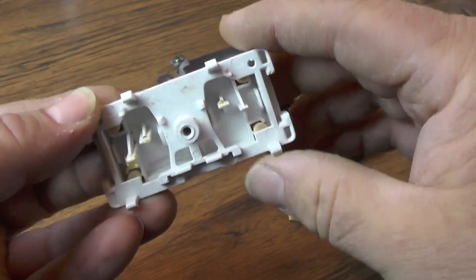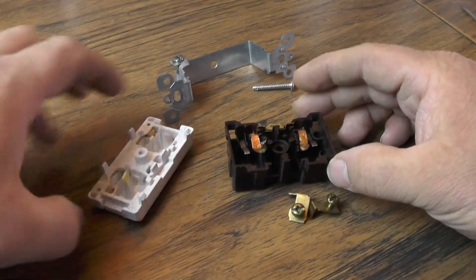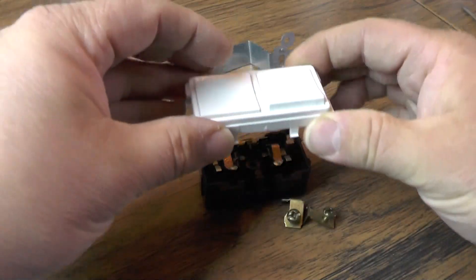So the two tabs are pretty important. We'll take a look inside here. Just kind of line it up. So this is how the switch goes together. It would be like that.